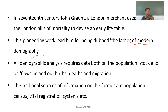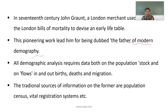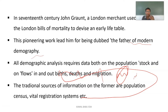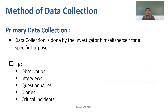All demographic analysis needs data coming from the population in terms of stock and flows. Demographic data includes the number of births, deaths, and migration rates. Traditionally, the main sources of demographic information are the population census and vital registration systems, which include death, birth, migration, marital status, and the number of eligible couples for pregnancy — as well as divorce and marriage records.